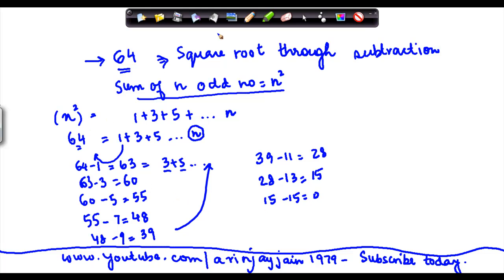So what did I do? I basically took 64 and I subtracted 1, 3, 5, 7, which are successive odd numbers, 9, 11, 13, 15, and I kept on subtracting till the time I got it to 0.